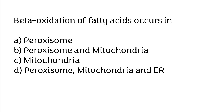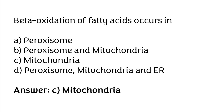Beta oxidation of fatty acids occurs in: mitochondria, chloroplasts, peroxisomes, or endoplasmic reticulum. The correct answer is option C: beta oxidation of fatty acids occurs in mitochondria.